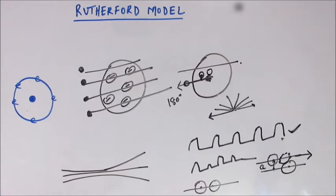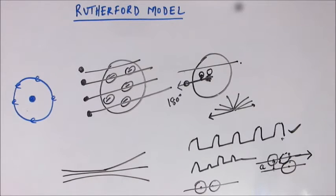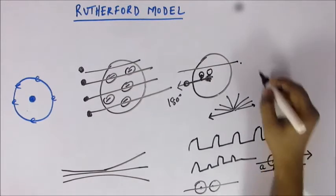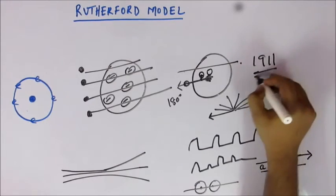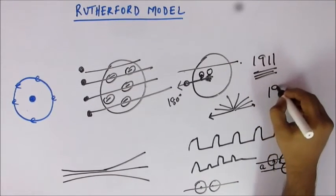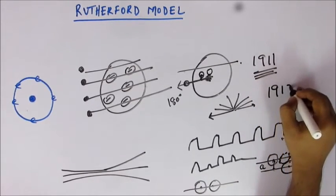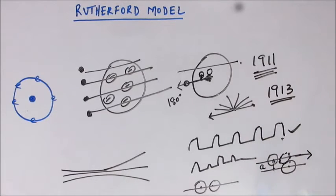This was quite a good development from the previous model and gave the world something new to work with for two more years. This model was given in 1911 but survived only until 1913, when Niels Bohr and others worked to give a new model, which we will study as Bohr's model.